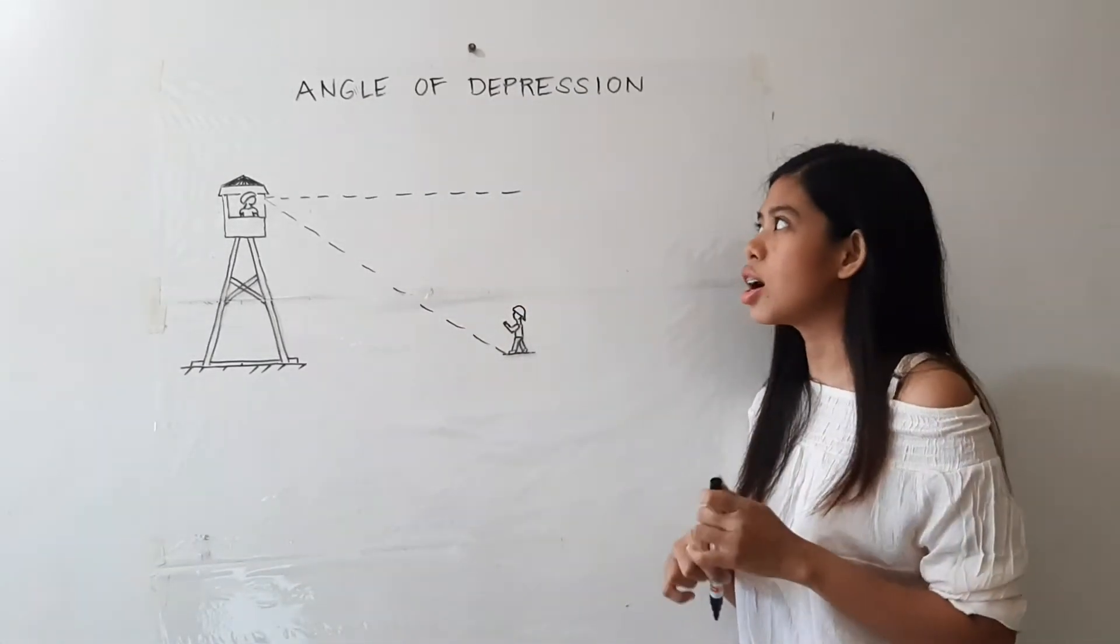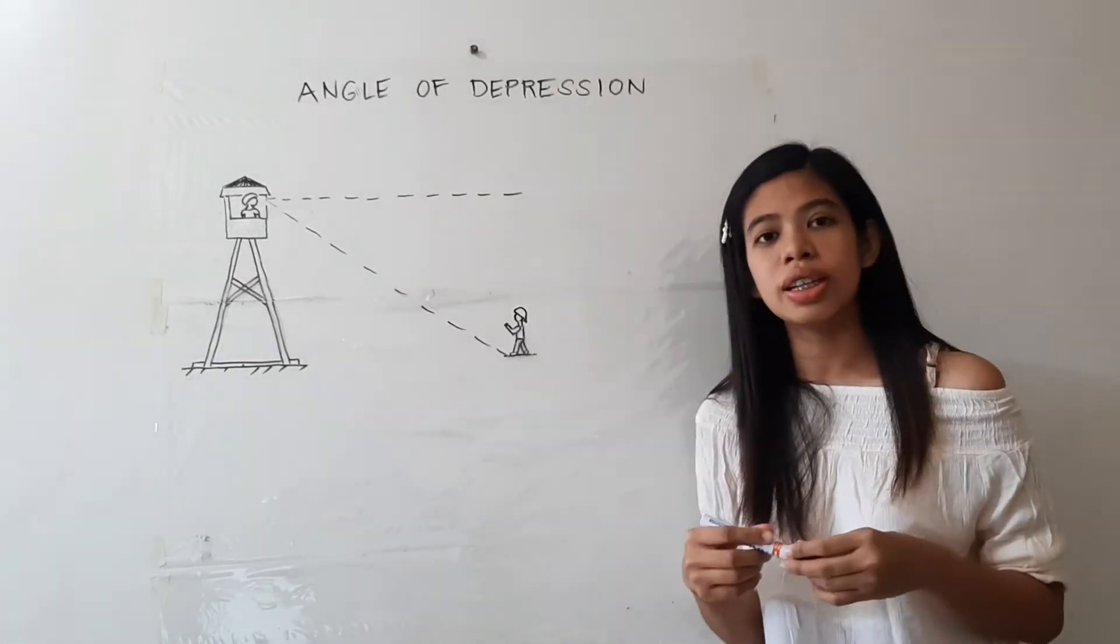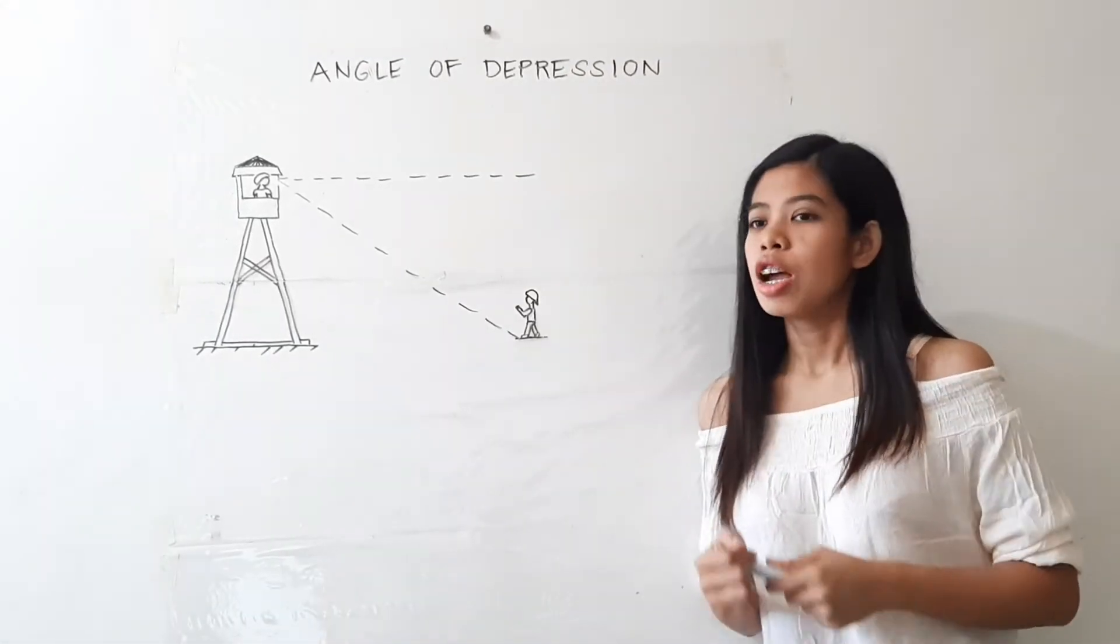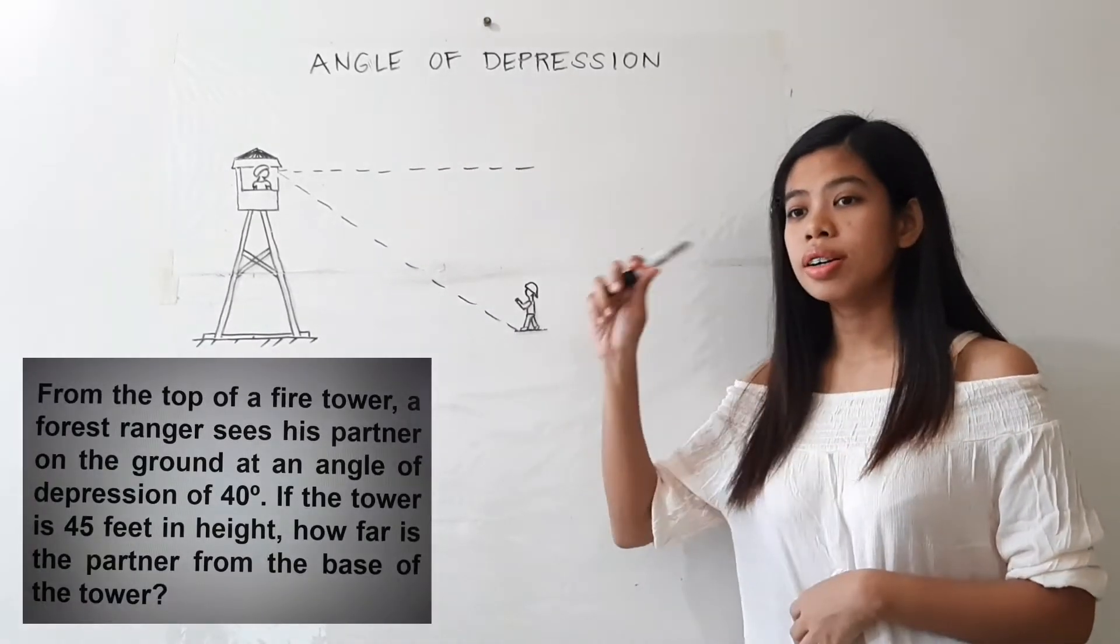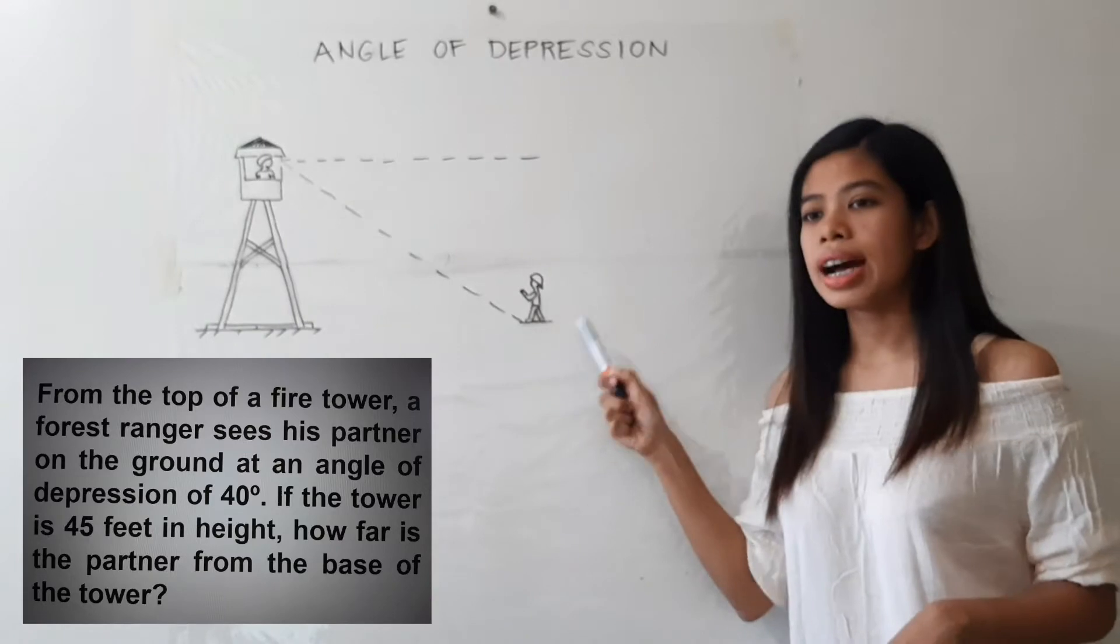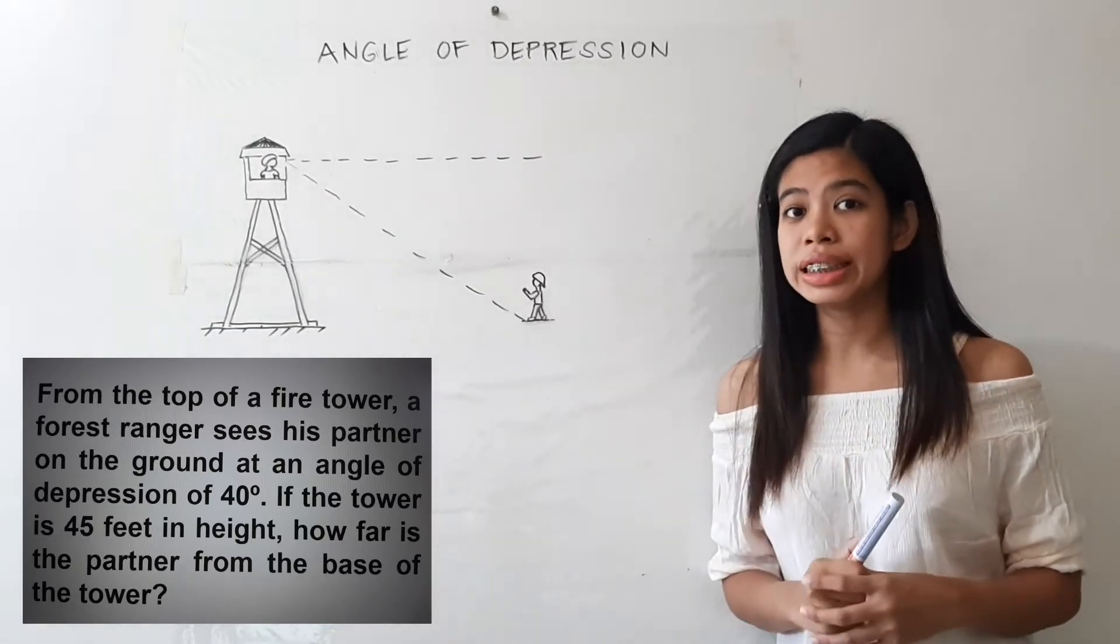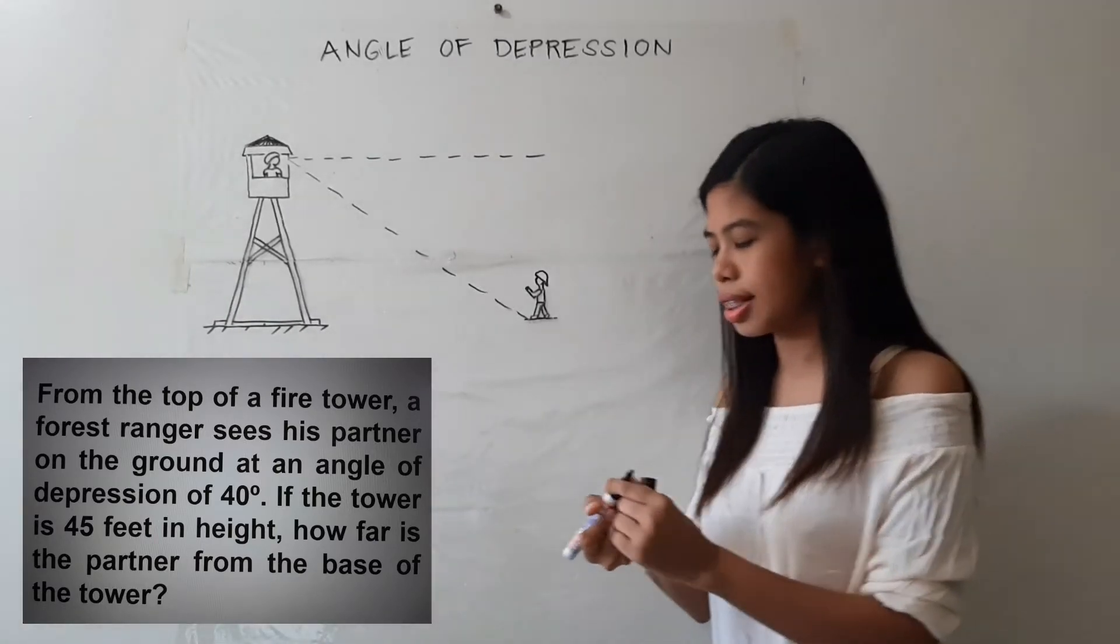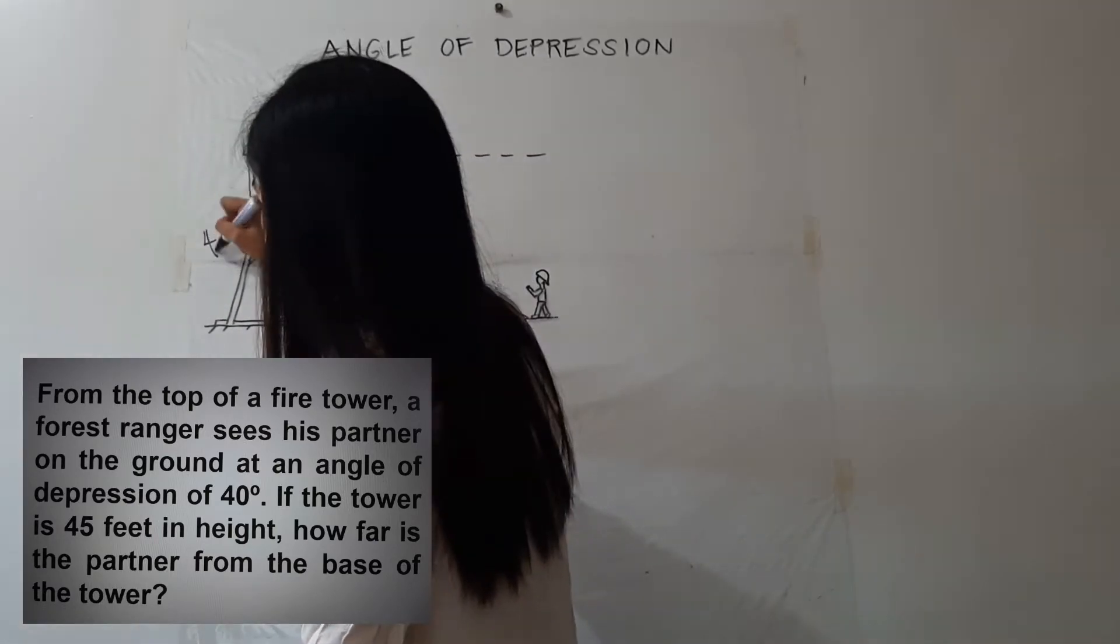Alright, so let us now apply our knowledge of the angle of depression in a problem. Here is the problem: From the top of a fire tower, a forest ranger sees his partner on the ground at an angle of depression of 40 degrees. If the tower is 45 feet in height, so we can say that this is 45 feet.